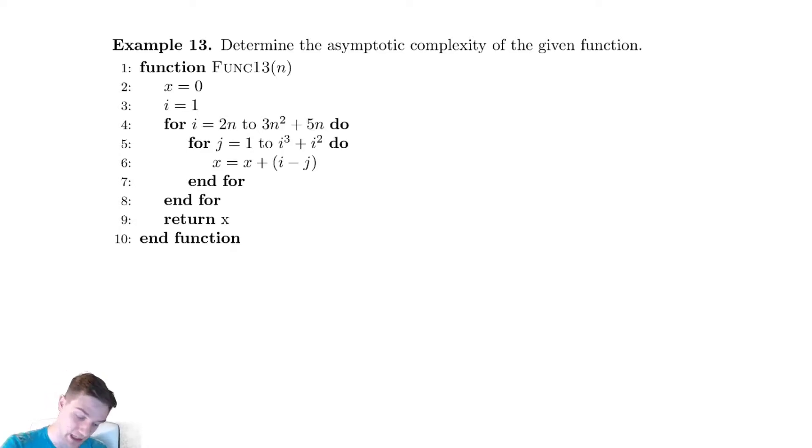So, how are we going to deal with this? Well, no place to start except for writing them as a summation. So, we have t of n is equal to the sum from i equals 2n to 3n squared plus 5n. That inner loop is j equals 1 to i cubed plus i squared. And the cost of 1 run is still constant.